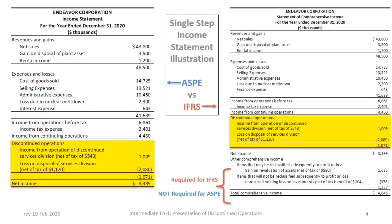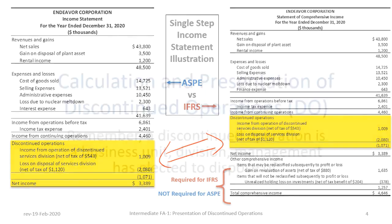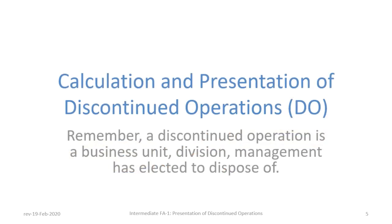Here are the ASPE and IFRS Income Statements presented in Tutorial 1 with the Discontinued Operations section of each highlighted in yellow. Notice the presentation of the Discontinued Operations section is identical for both IFRS and ASPE. Therefore, the content and approach contained in this tutorial is applicable to both ASPE and IFRS. Earnings per share must also be disclosed for discontinued operations, which will be discussed in another tutorial. The remainder of this tutorial will focus only on the Discontinued Operations section, and our objective is the calculation and presentation of that section.